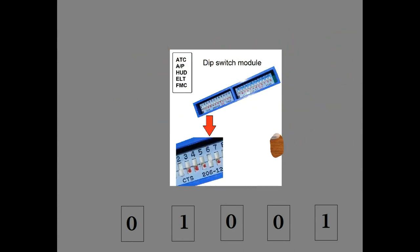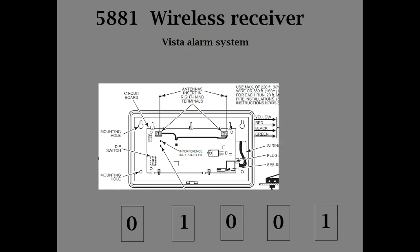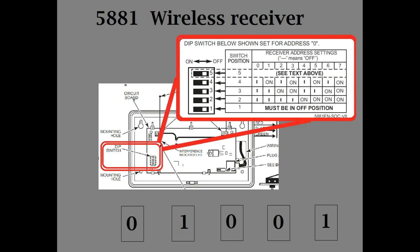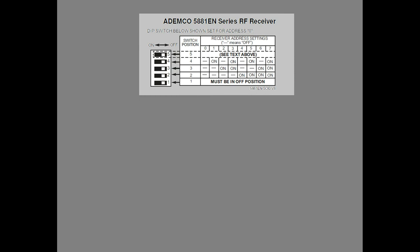Another place you'll experience binary numbers is the world of aviation. This is called a dip switch module — it's a component that has many small mechanical switches on it. An avionics technician physically changes the position of the switch to either on or off to configure aviation systems for proper operation. I covered this switch extensively in my video labeled octal to hexadecimal to binary conversions. Let's move back into your house. If you're going to be installing your own home security system, you'll also be exposed to dip switches. Here we have a 5881 wireless receiver for an alarm system, specifically the Vistas.